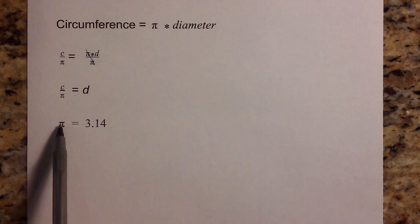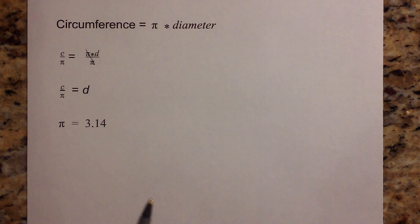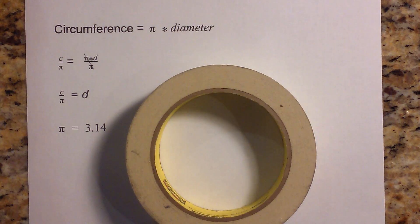And then for these examples I'm going to use pi is equal to 3.14. Okay, so the first object I have is, let's find the diameter of this tape.